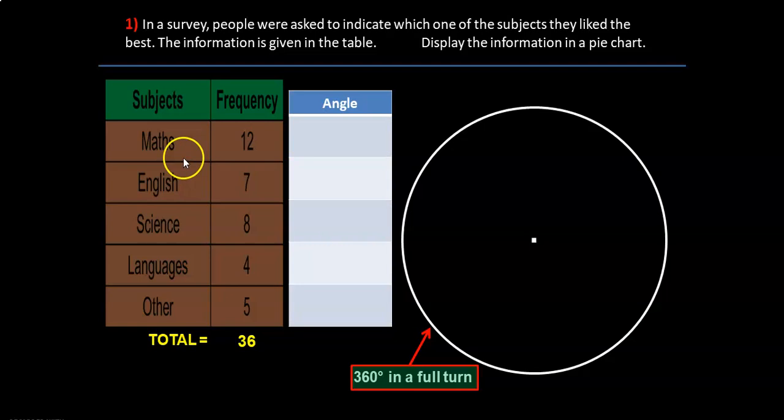So in order to do that I need to know the angle for each subject. What angle represents maths, English, science and so on? So I need to calculate the angle for each subject. To do that I know there are 12 people out of 36 people who liked maths. So we can write this as a fraction 12 upon 36 and since the complete turn is 360 degrees we multiply 12 upon 36 by 360. Now in order to simplify this problem there are various approaches you can go through. You can simplify 12 and 36 which gives you one third and then 360 divided by 3 is 120. Or you can divide 360 by 36 first. So 360 divided by 36 times by 10 is 120.